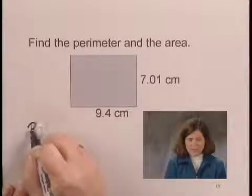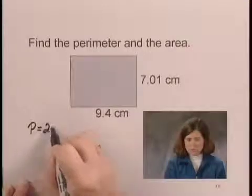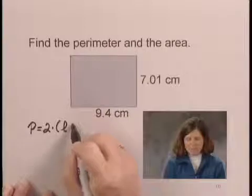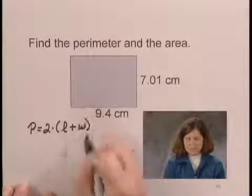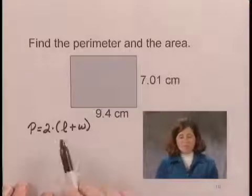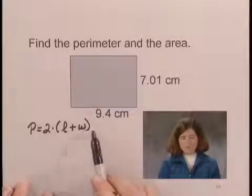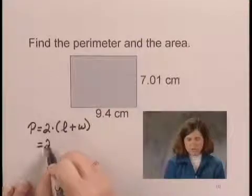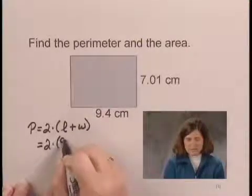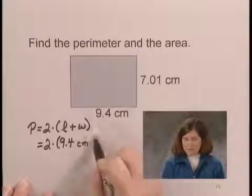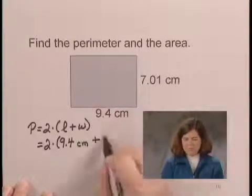We have P equals 2 times the quantity length plus the width. Once we have the formula written, we can substitute a number for the length and the number for the width. The length is 9.4 centimeters, so we have 2 times 9.4 centimeters plus the width is 7.01 centimeters.